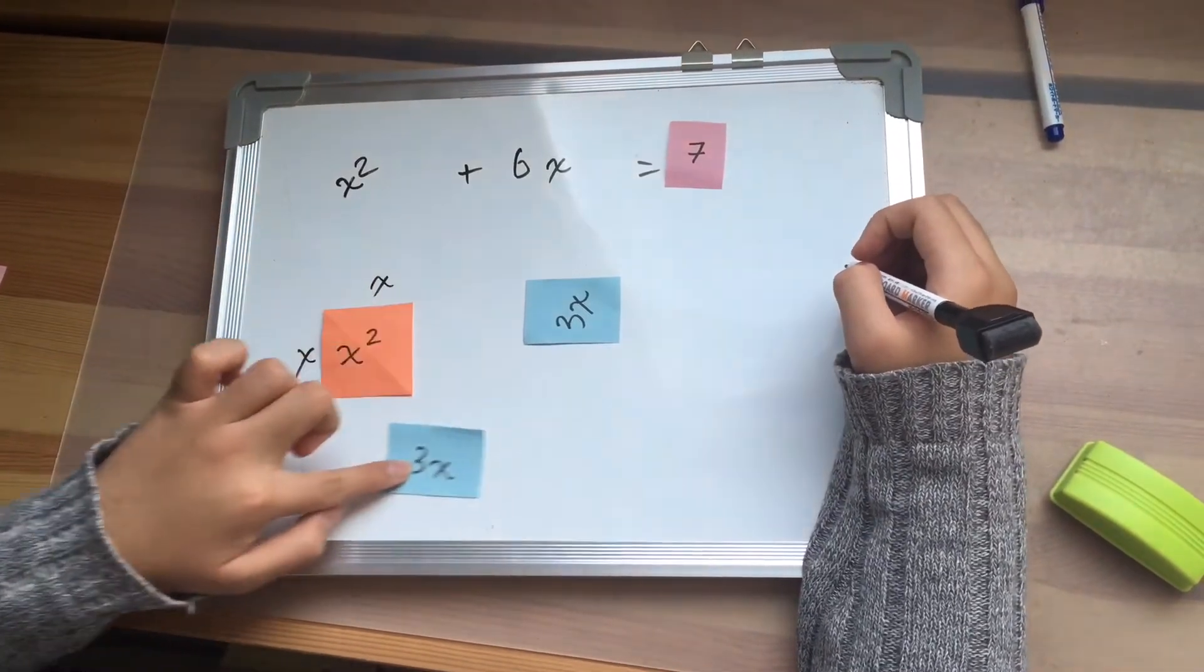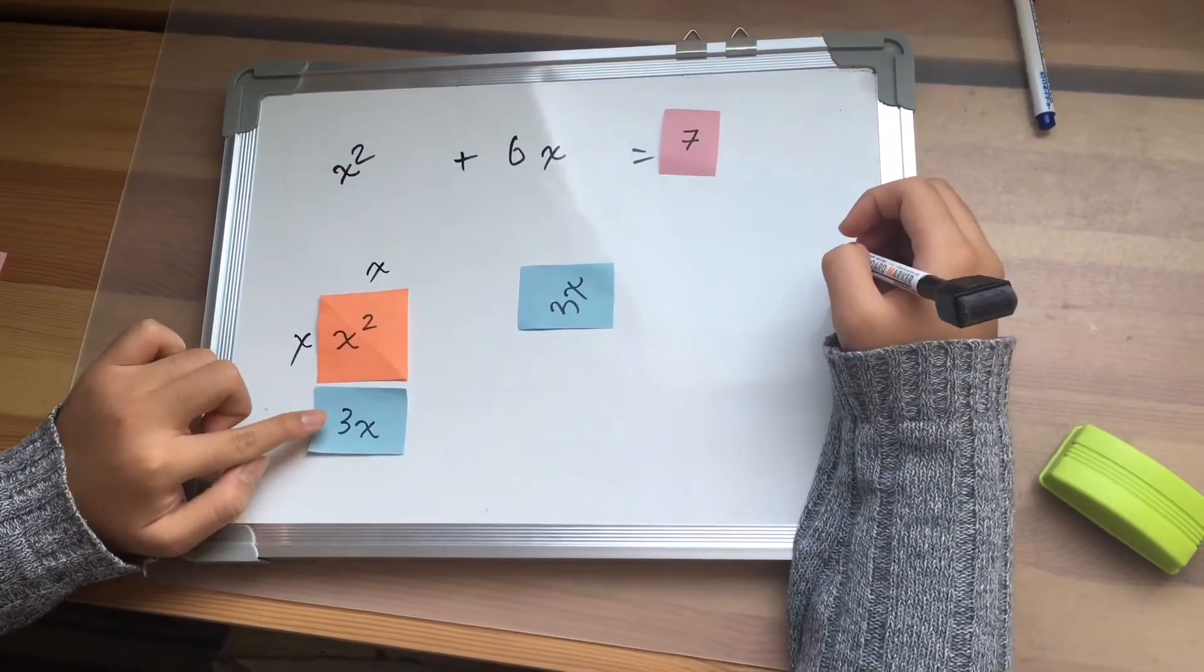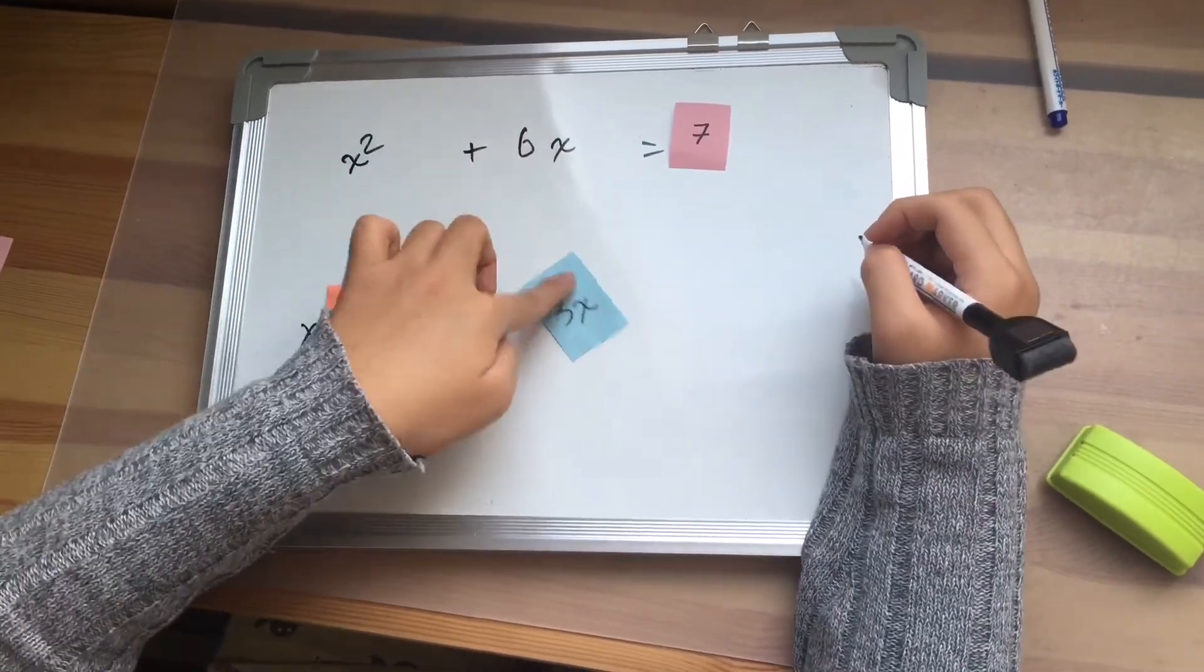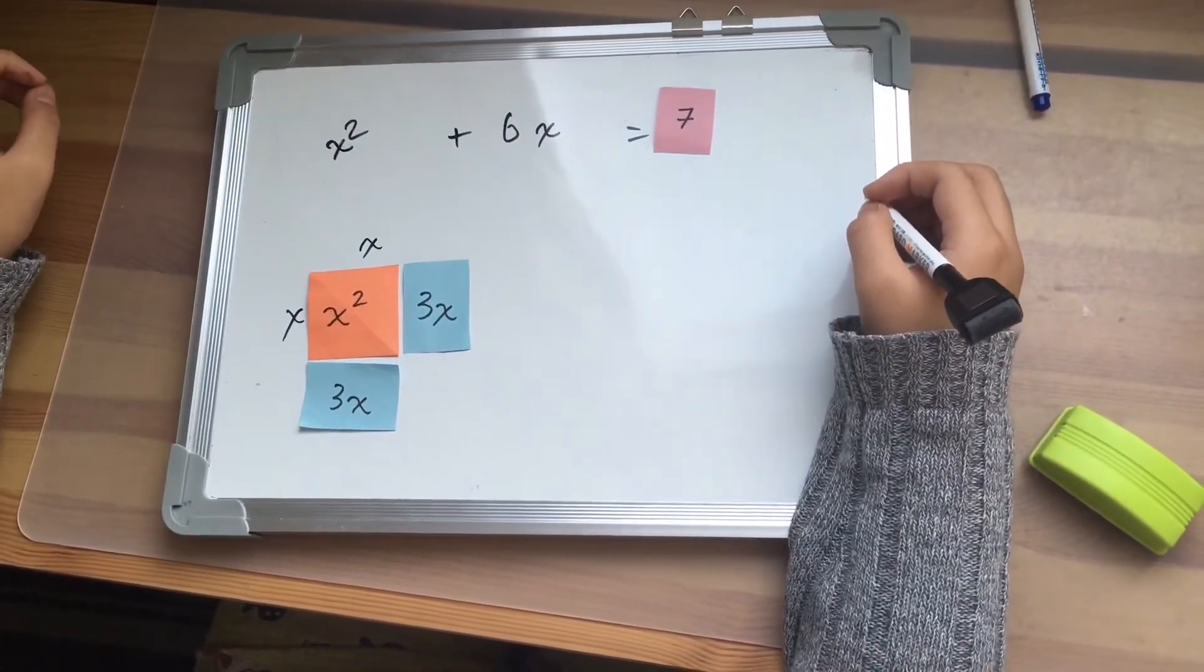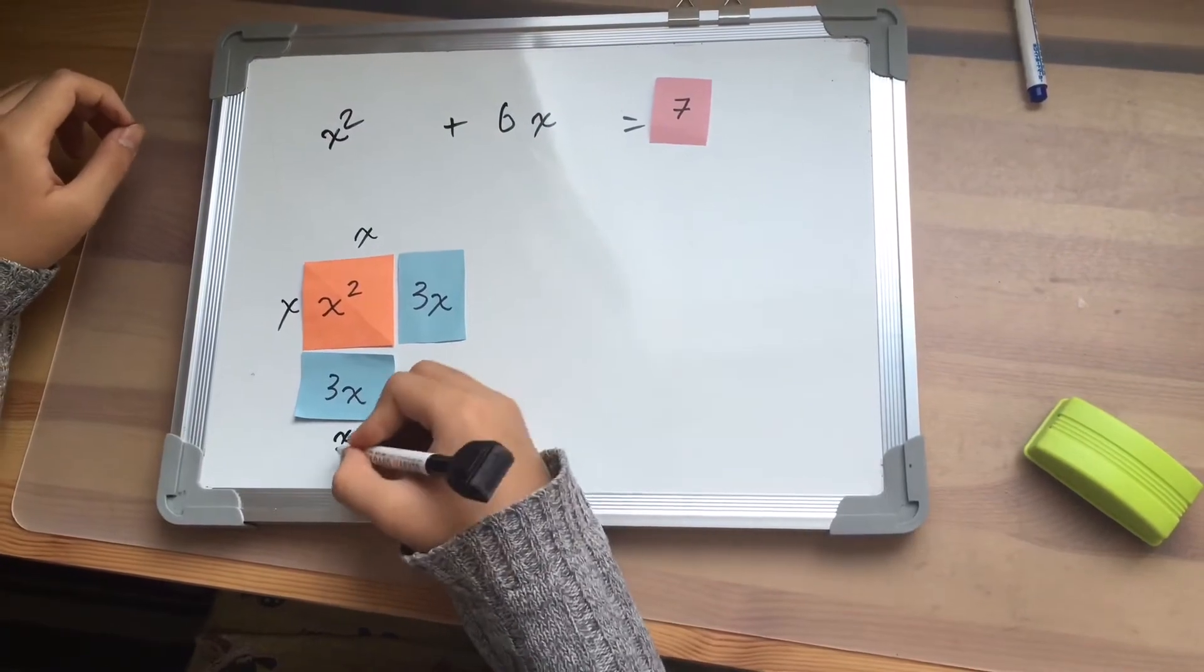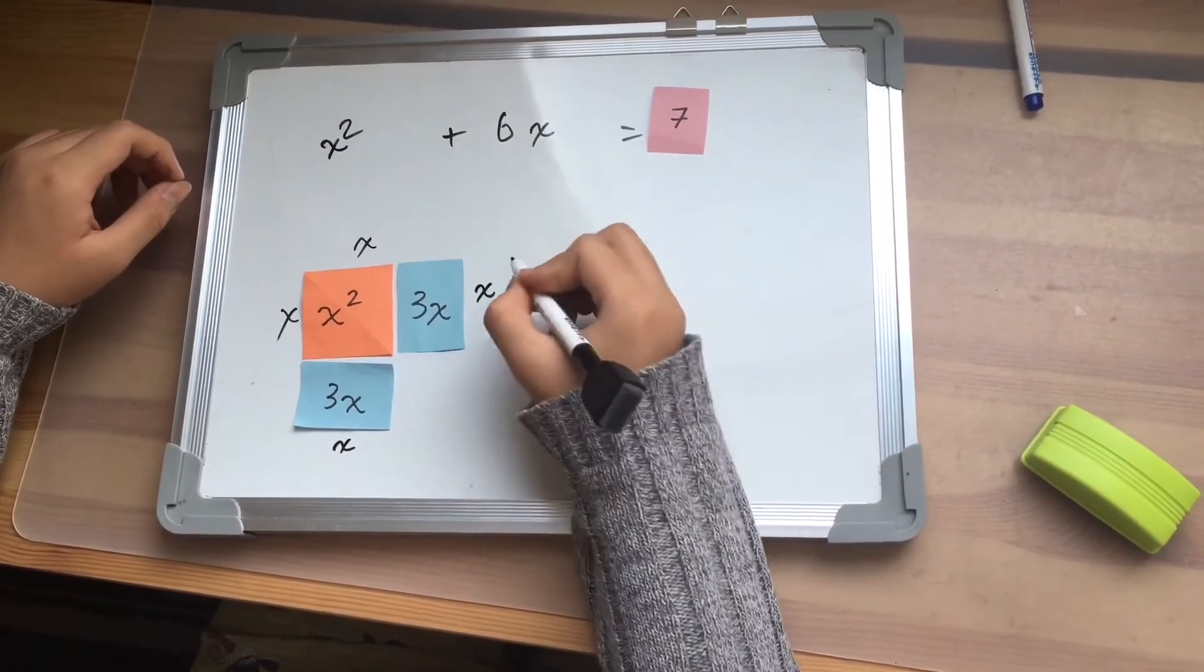I will put this 3x rectangle here and the other 3x rectangle here. Now we know that this length will be x and this one will be x as well.